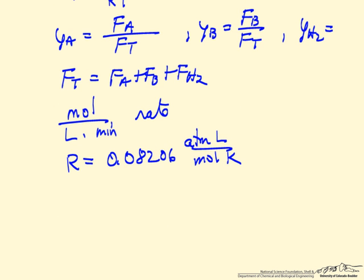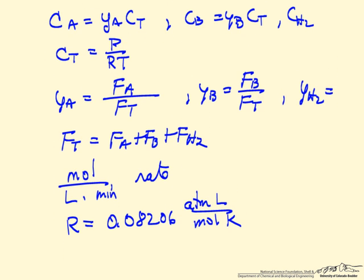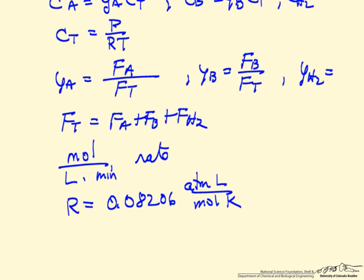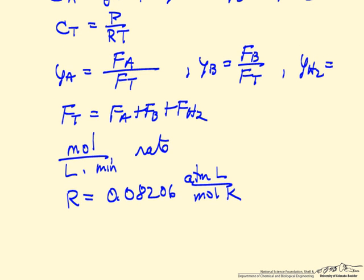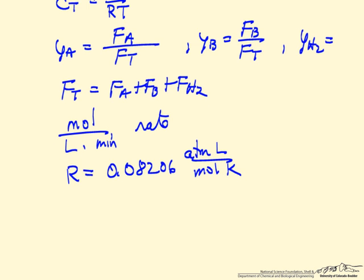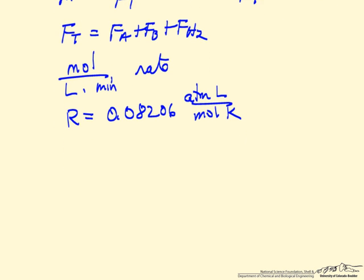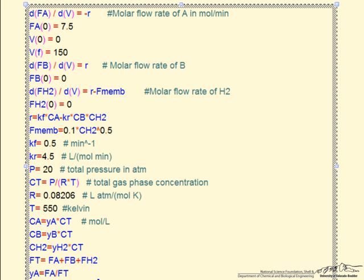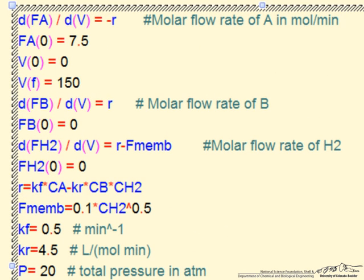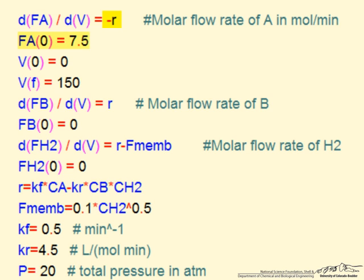The problem is almost complete. We have the equations to put into a differential equation solver — in this case, Polymath. We put in the equations and those that calculate concentrations, along with the various constants needed for the rate constants, pressure, and temperature. We then solve from volume equals 0 to volume equals 150 liters.